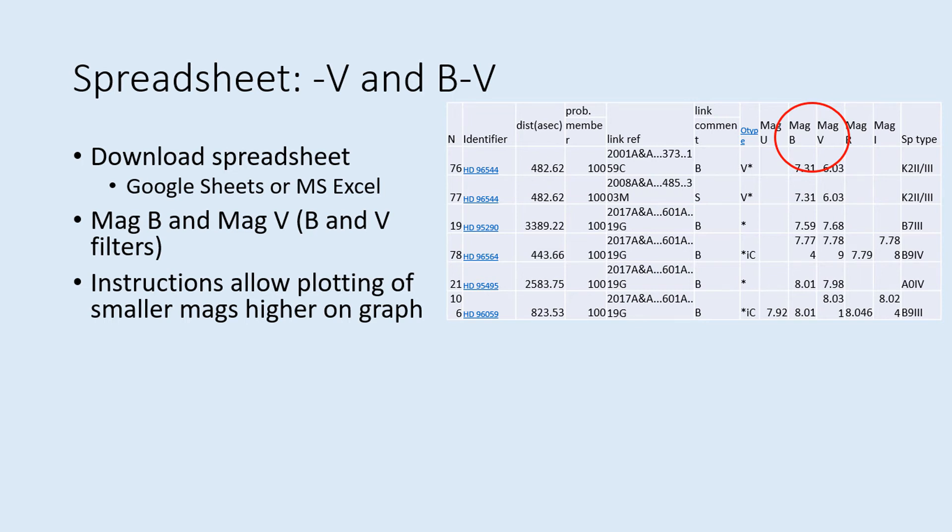The first step in the instructions is to look for any rows that are missing either the B or V magnitudes. If there are any, then cut and paste those rows down to the bottom of the file.